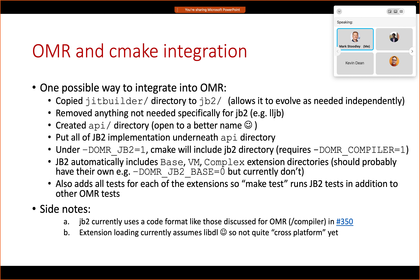There are currently about five additional tests that run at the beginning of an OMR test run, testing the base extension, VM extension, and complex extension — though complex isn't fully working yet so those tests don't actually run. It also runs some functionality tests for the JIT Builder core, which defines what a compiler and extension are and the IL implementation code, with a few small tests against that code as well.